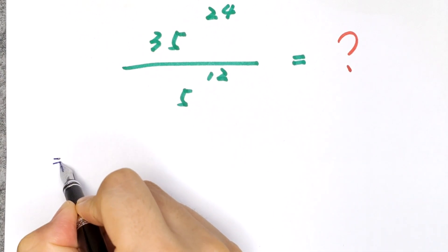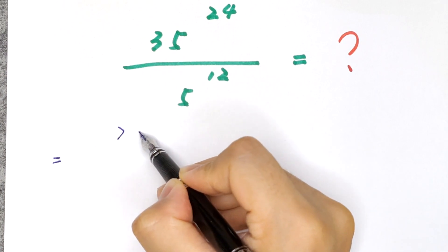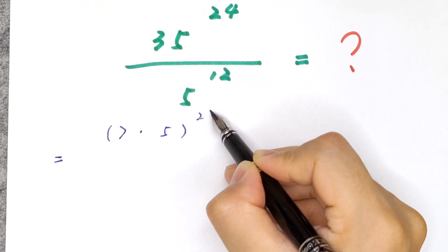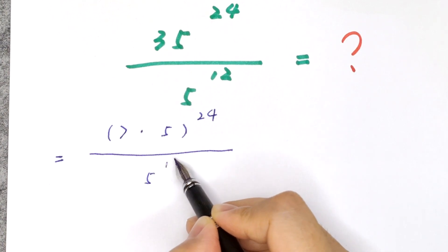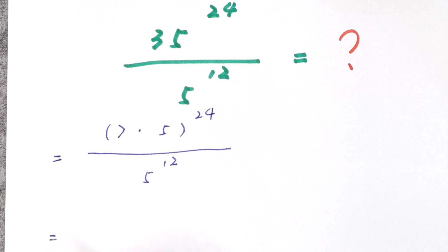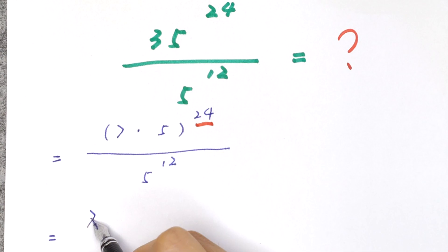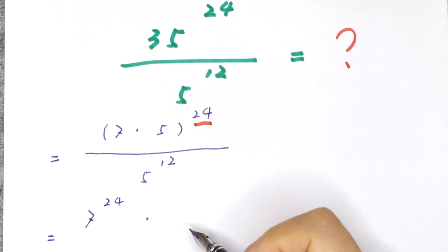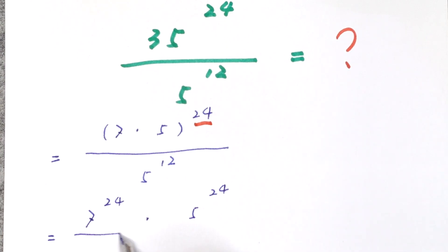It will be equal to: 35 is the same as 7 times 5, bracket to the power of 24, divided by 5 to the power of 12. Taking this into the bracket, it will be equal to 7 to the power of 24 times 5 to the power of 24, over 5 to the power of 12.